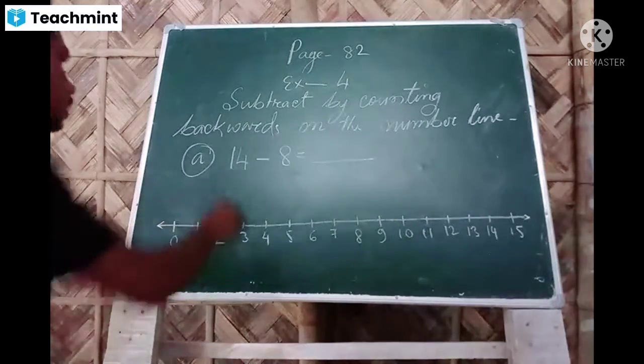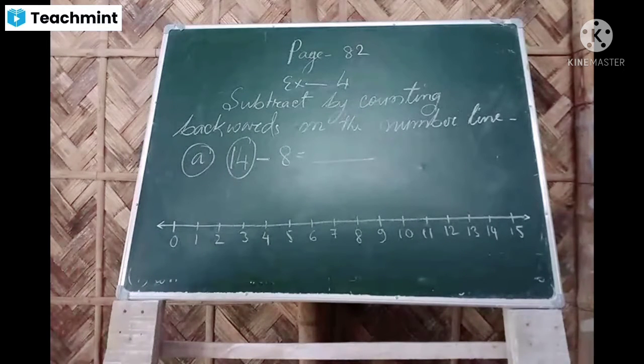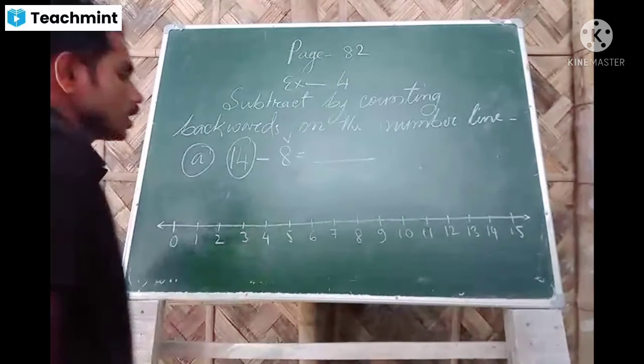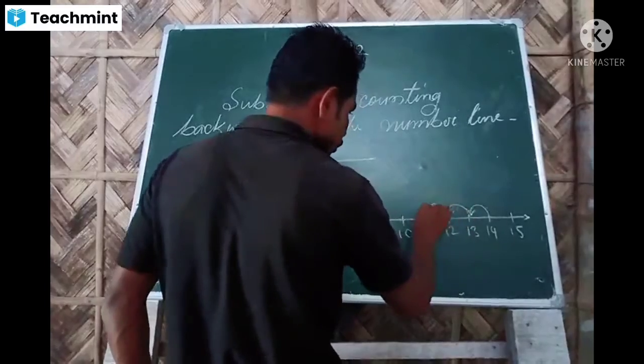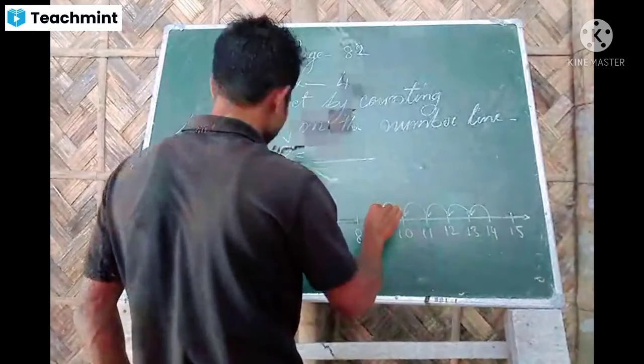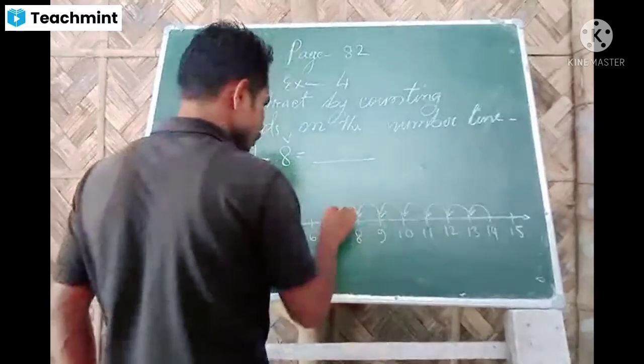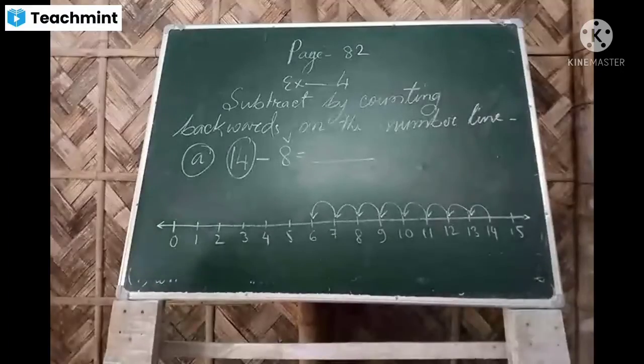Here this number is 14. Now 14, so we have to start our backward from 14. And here 8 have to turn up to backward, okay. Like this, 14 to 13. 1, 2, 3, 4, 5, 6, 7, 8. We have to come backward, okay. And then we are working 6, so the answer is 6.